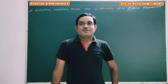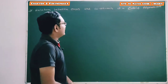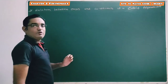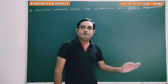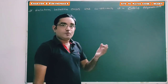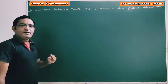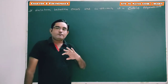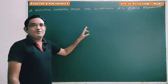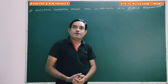Hello students, how are you? Let's talk about the relationship between zeros and coefficients of cubic polynomials. There are three types of polynomials: linear polynomial, quadratic polynomial, and cubic polynomial. We have already discussed the relationship of zeros and coefficients of quadratic polynomials. In this video, we have to discuss the relationship between zeros and coefficients of cubic polynomials.